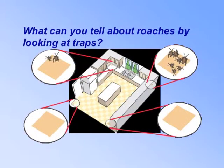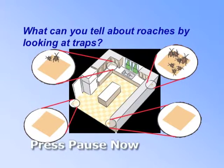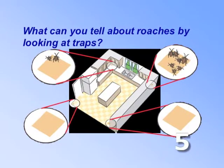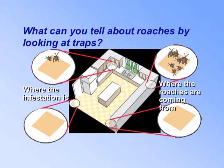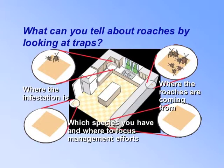What can you tell about roaches by looking at traps? The traps tell where the infestation is concentrated and where the roaches are coming from. You can identify the roaches and determine if management efforts should be focused indoors or outdoors.